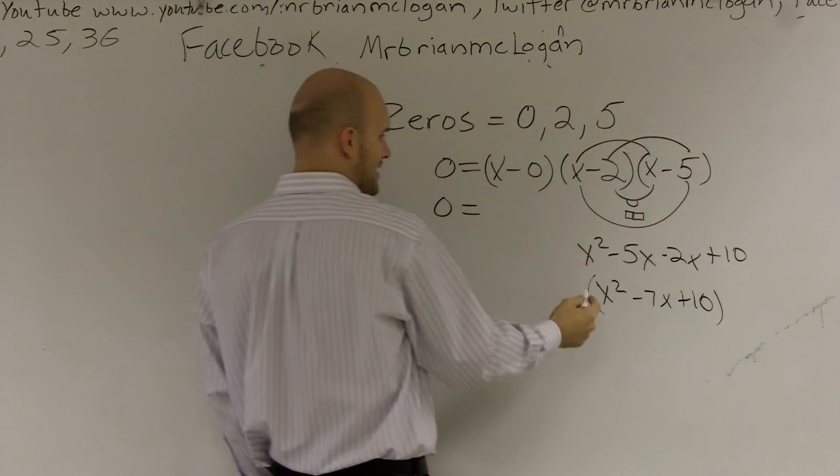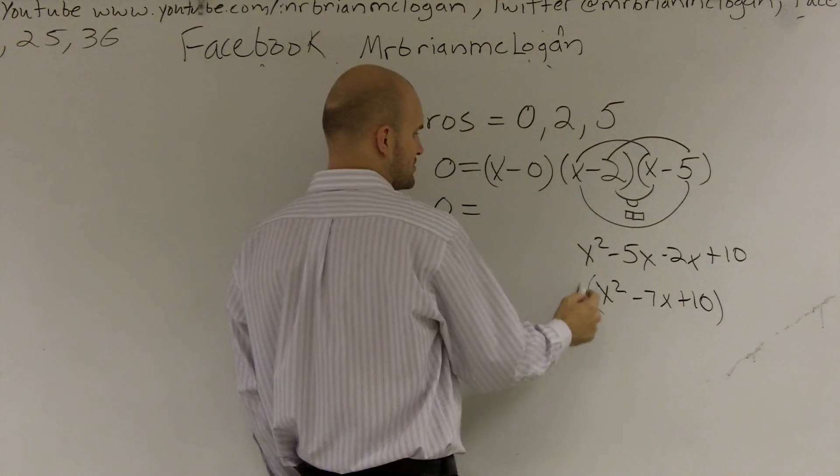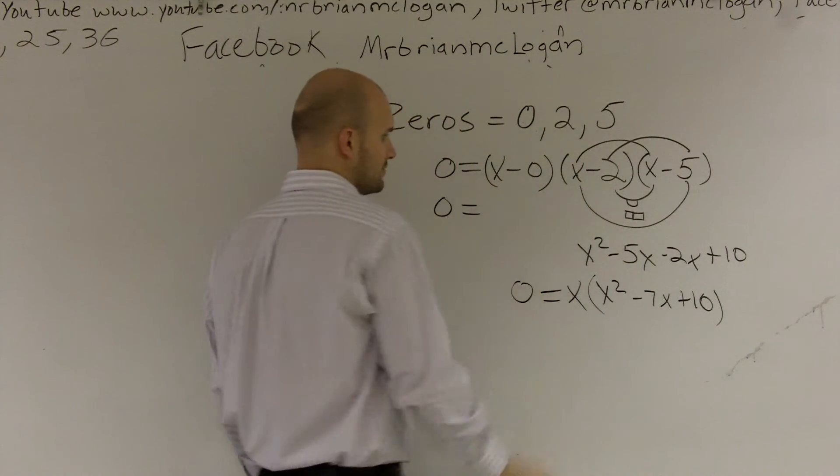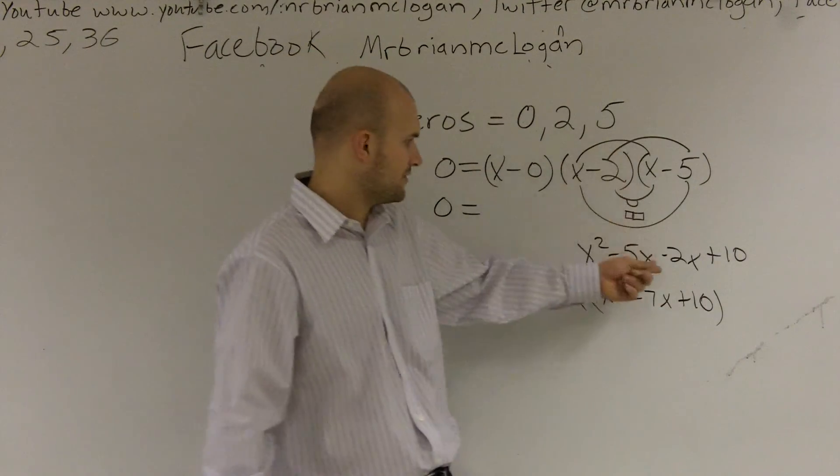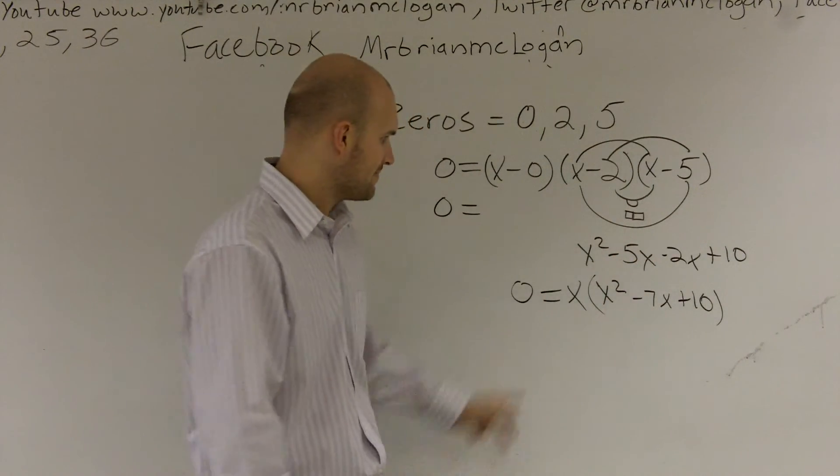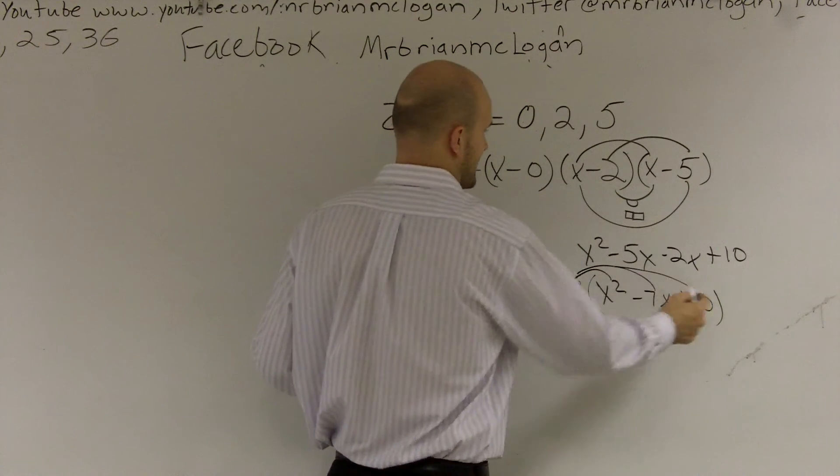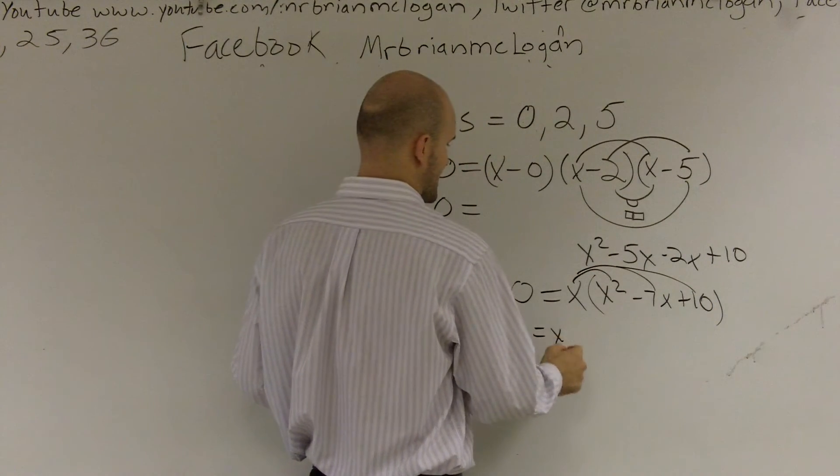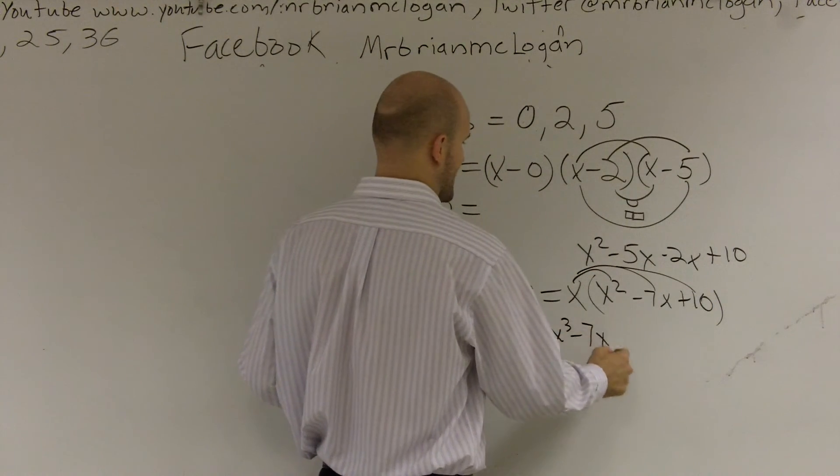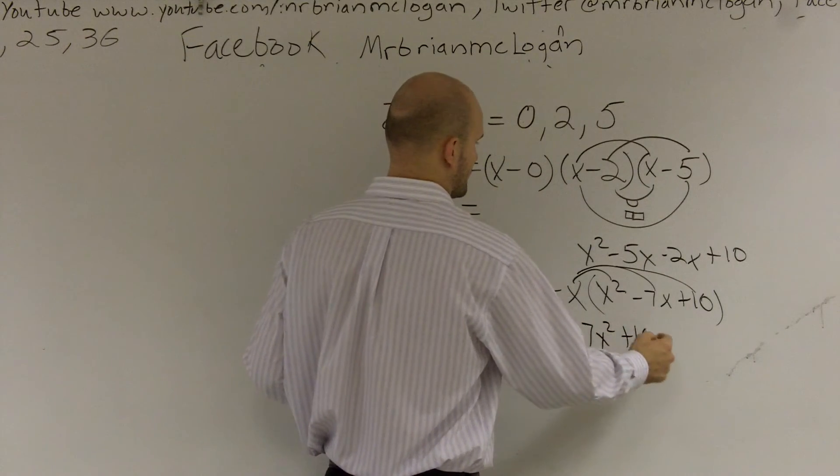Don't forget we're multiplying by my value of x minus 0, which is just x. So I just FOIL that over here. Then I need to make sure I distribute my x to every term. So 0 equals x cubed minus 7x squared plus 10x.